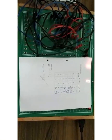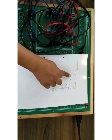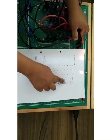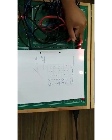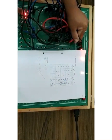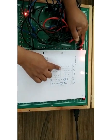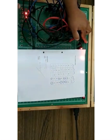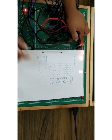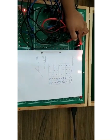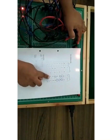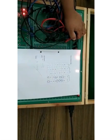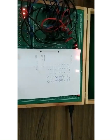Now we verify the full subtractor truth table. For 000, difference 0, borrow 0. For 001, outputs are 1 and 1. For 010, outputs are 1 and 1. For 011, output is 0 and 1. For 100, output is 1 and 0. For 101, output is 0 and 0. For 110, output is 0 and 0. For 111, output is 1 and 1. All outputs match, so the full subtractor is verified.